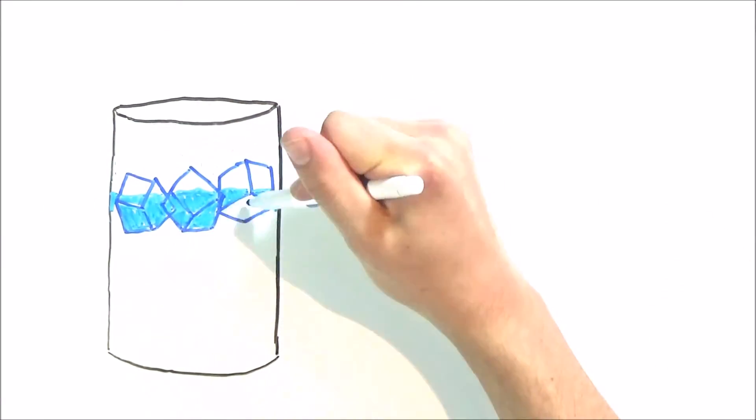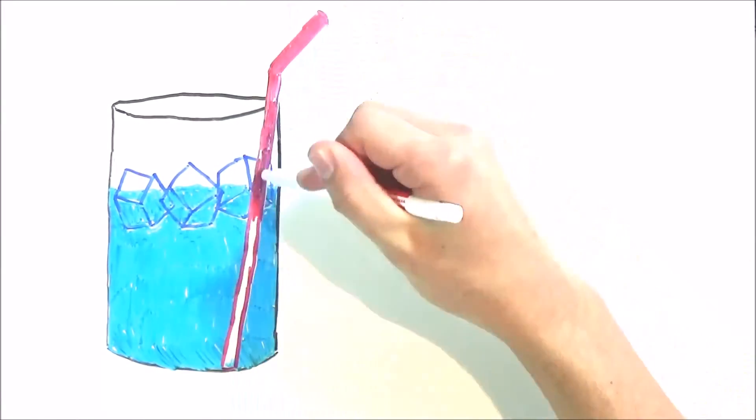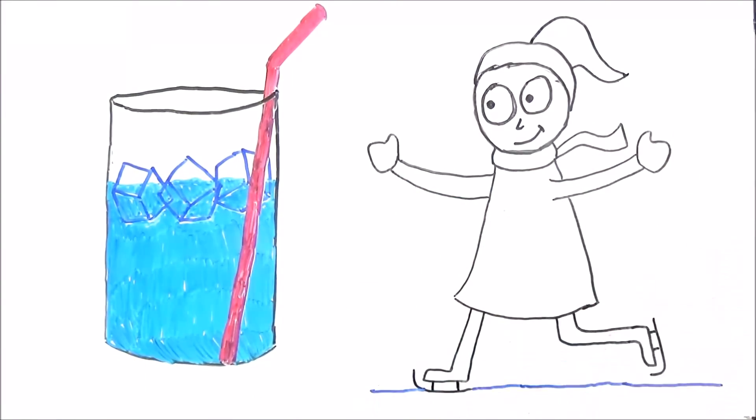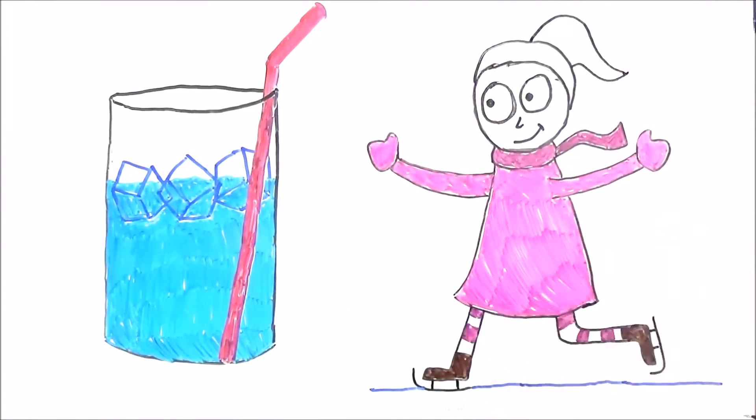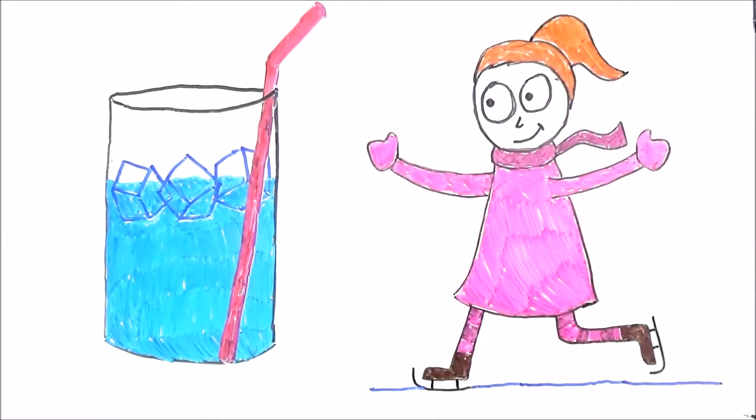We all have seen ice cubes floating in a glass of water and the sheet of ice formed over a lake that allows for skating. Water is actually one of the only known substances on earth that is able to float when frozen.